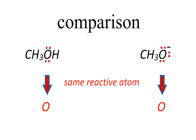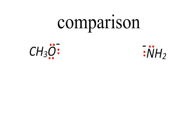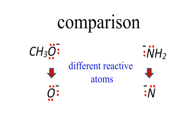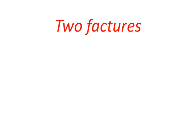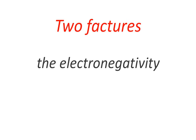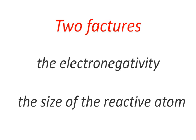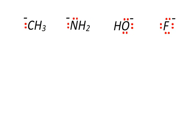Electronegativity and size: the comparison that we made before was between two molecules with the same reactive atom, such as oxygen. But what if we want to compare between two molecules with different reactive atoms, like oxygen and nitrogen? In this case, two factors should be taken into account: the electronegativity and the size of the reactive atom.